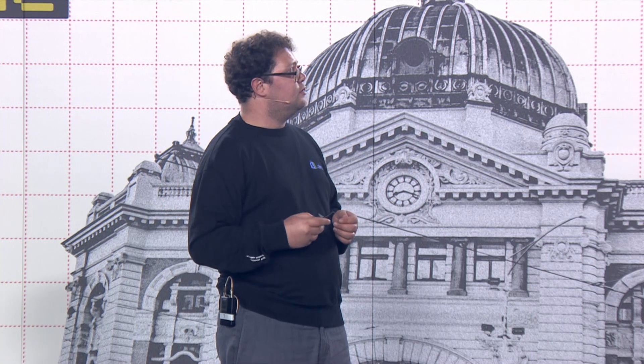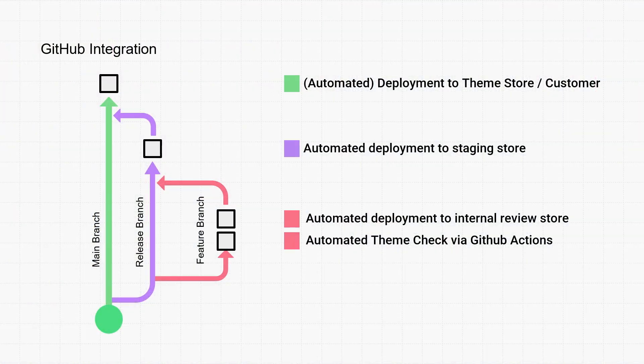This also allows you to use techniques like GitFlow, which provides more advanced branching models so you can have a very robust format for developing, previewing, and releasing changes — ensuring you're not overriding changes.